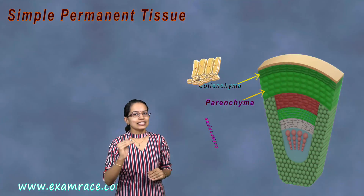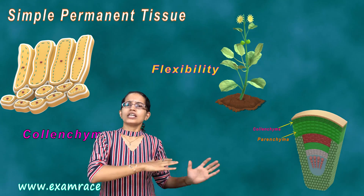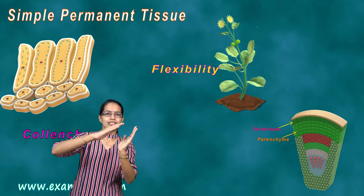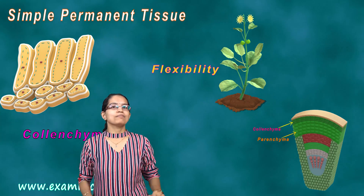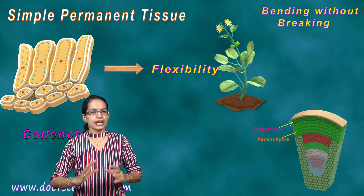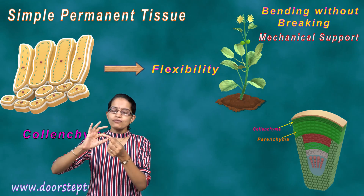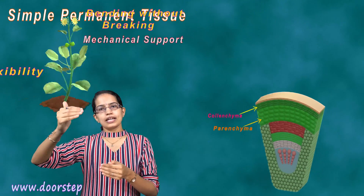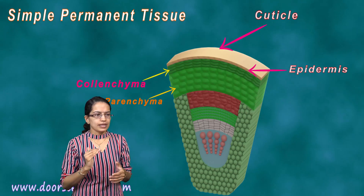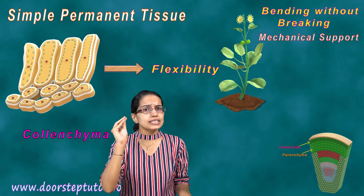The next is colenchyma. Colenchyma is basically seen for flexibility. If there is a strong gust of wind, the plant does not break down — it just bends and regains its shape. That is the flexibility provided by colenchyma. Colenchyma provides flexibility and bending without breaking, provides firm mechanical support to plants, and is usually seen in the region of the leaf stalks below the epidermis. These are irregularly thickened with very small intercellular spaces.